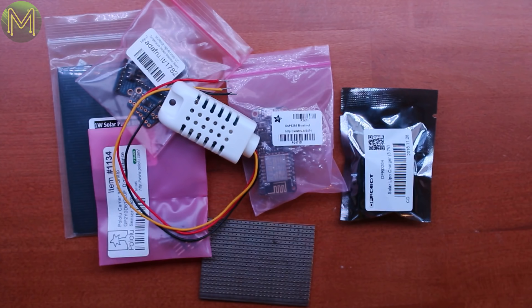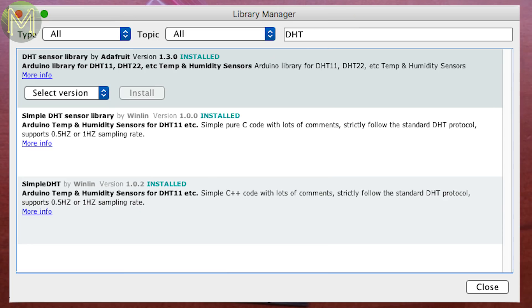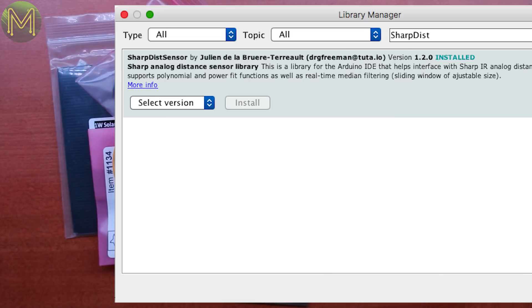On the software side, I installed the TSL2561 and DHT22 library from Adafruit, the sharp distance sensor library, the pub sub-client MQTT library, and enabled support for ESP8266 in my Arduino IDE.